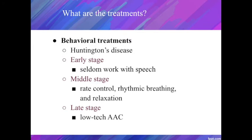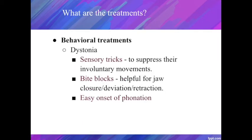For Huntington's disease, in the early stages the clinician usually has little to do because the patient's speech is still quite intelligible. In the middle stages, patients often rush to complete their utterances before a choreic movement interrupts. SLPs could work with patients on rate control, rhythmic breathing, and relaxation to increase intelligibility. In the late stage, the patient may be restricted to single-word utterances, and a low-tech AAC device will be appropriate because it does not require new learning.